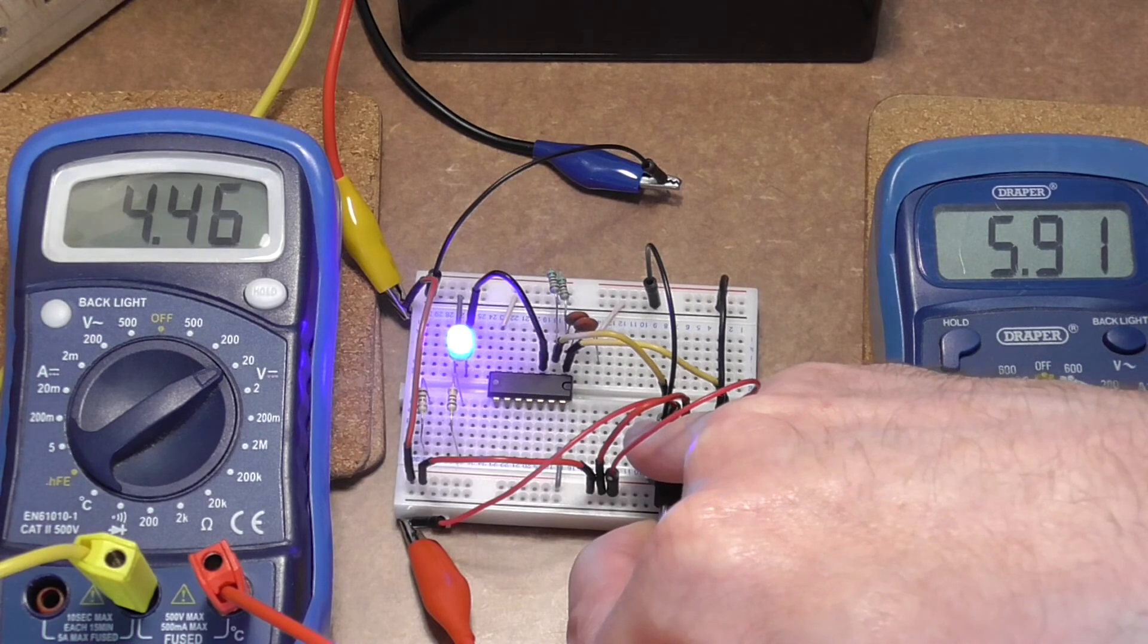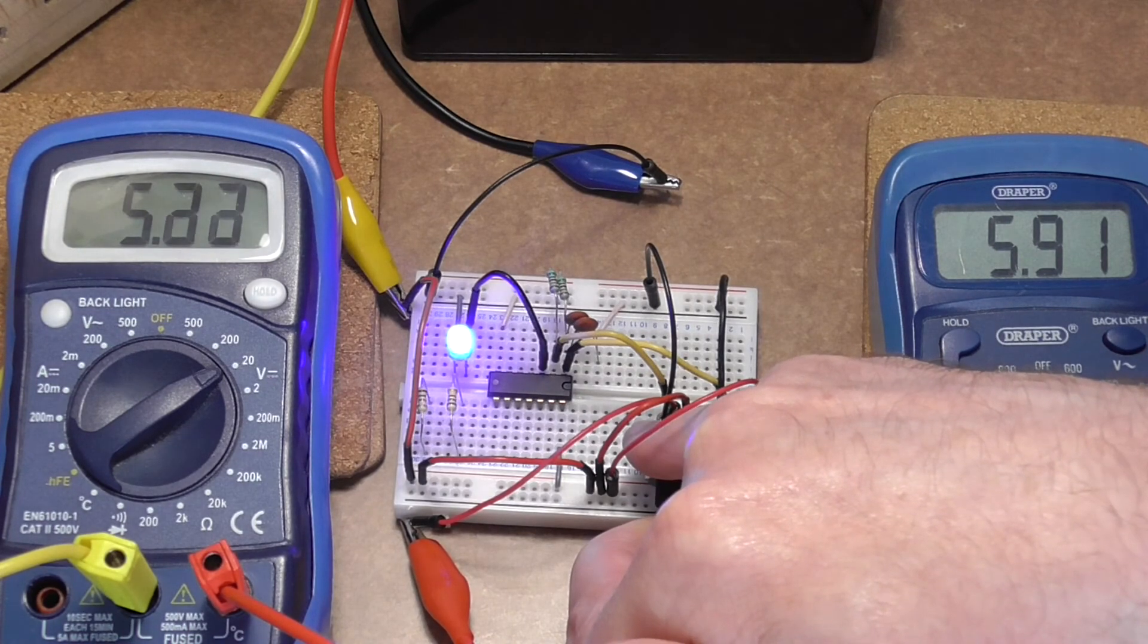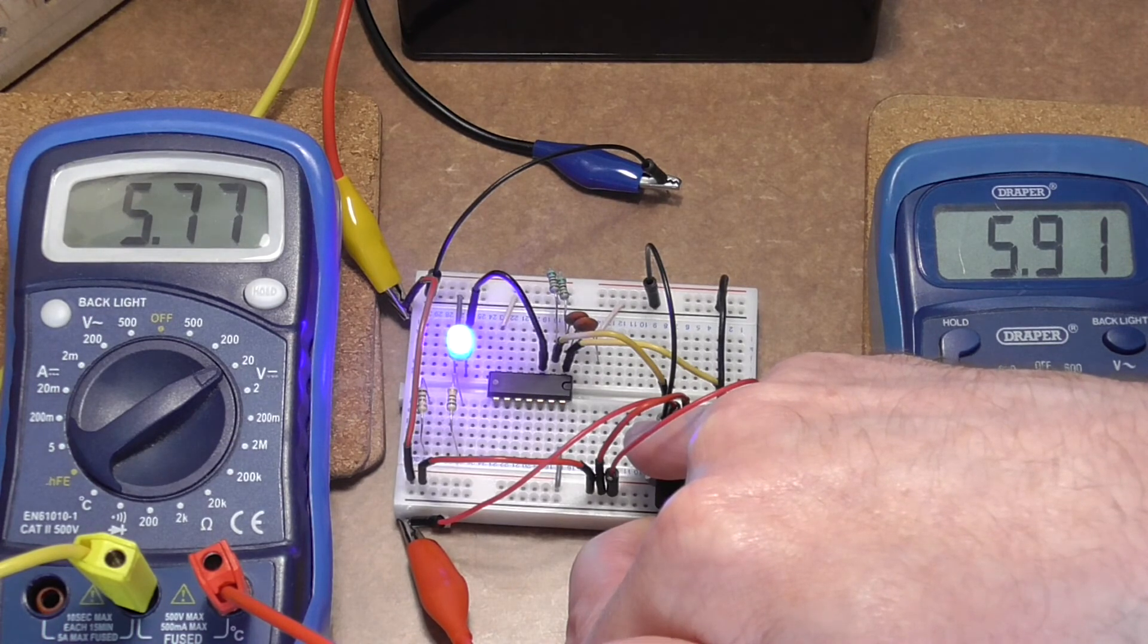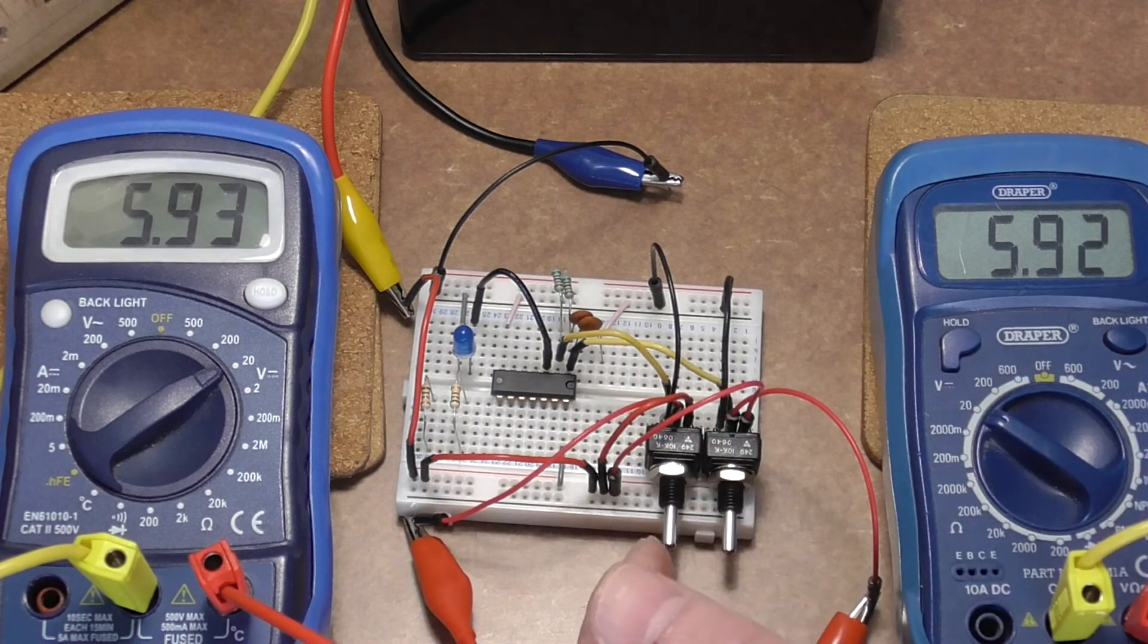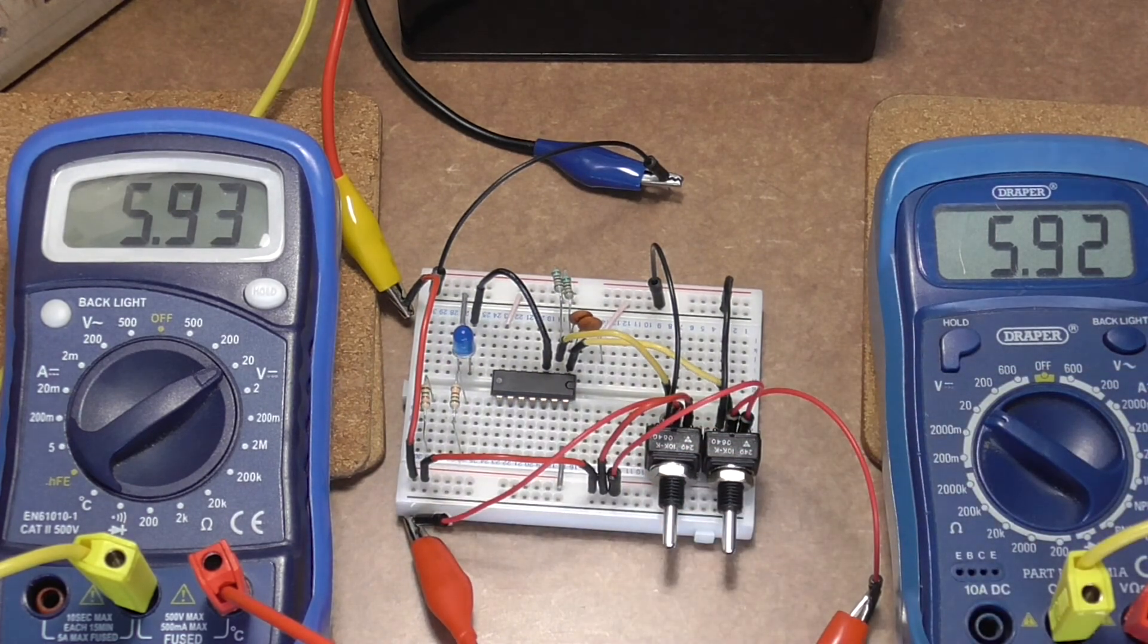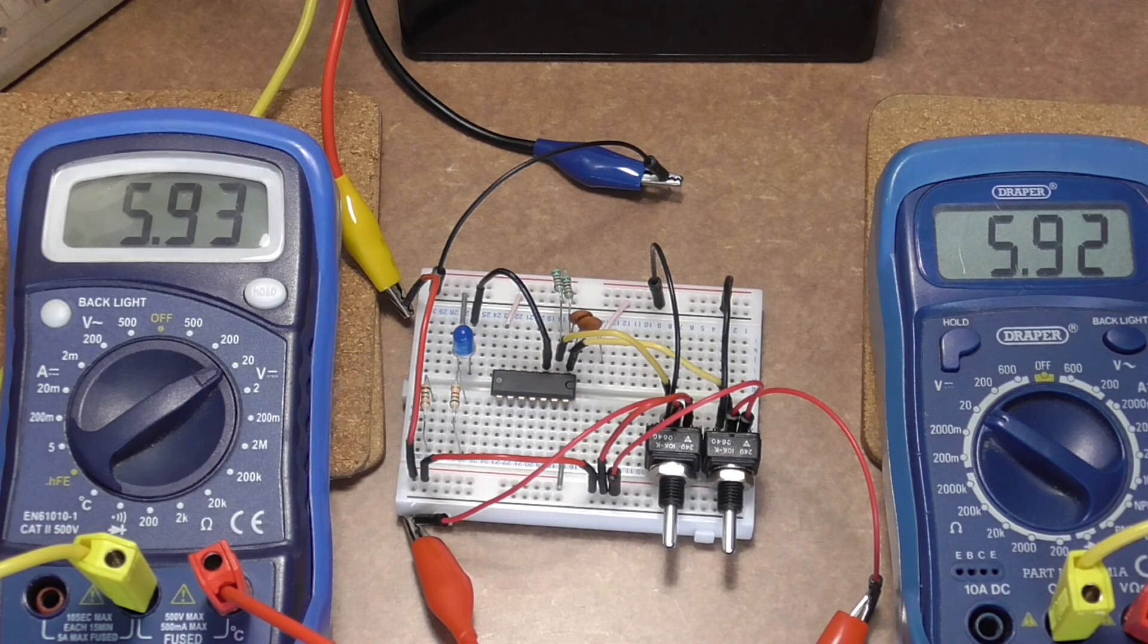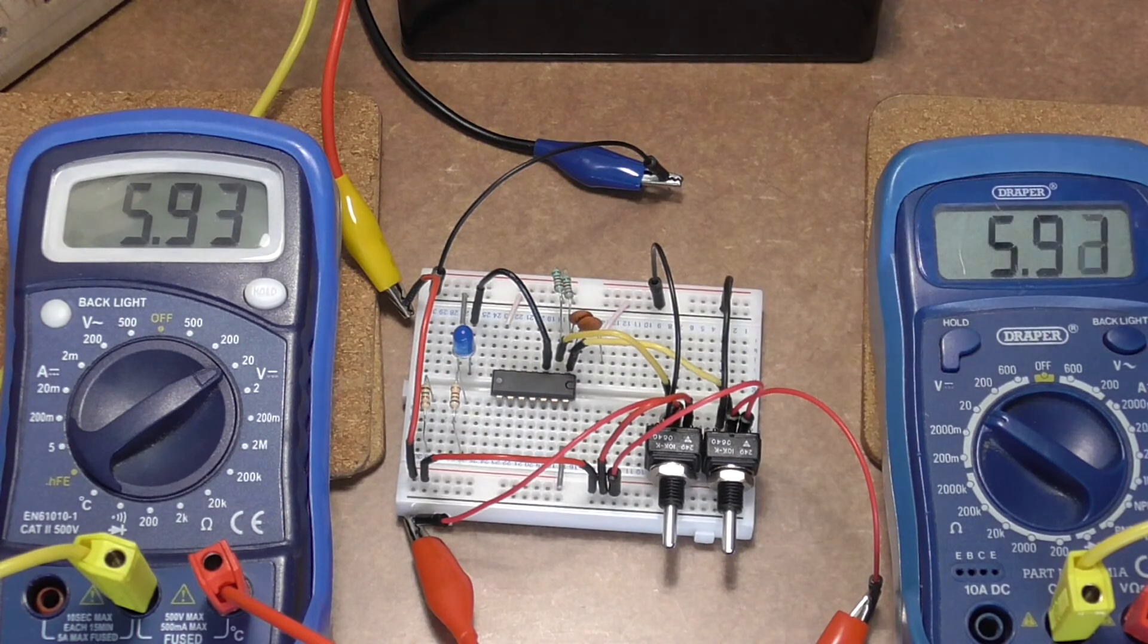And again, if we turn that back up, it's going to be again around about five point nine, six volts before it actually counts it as a high again. Five point six, five point seven, yeah, about five point nine. So there we go and it goes off again. Now it's considered that both inputs are now counted as high and the output goes off. That's brilliant, that's exactly what I want it to do.